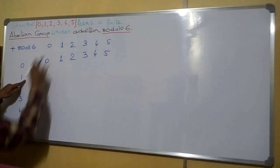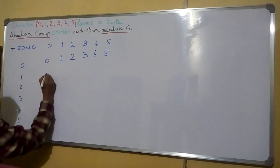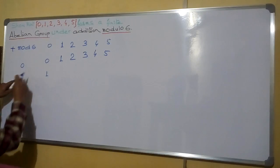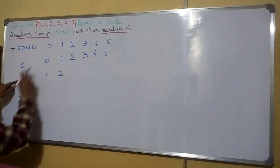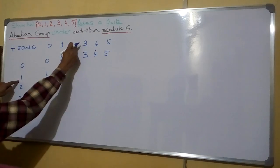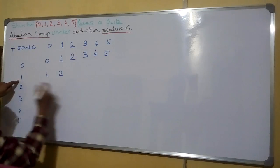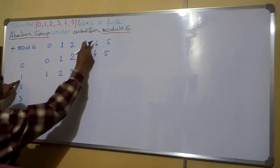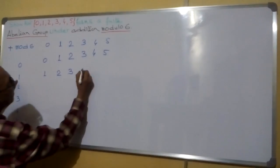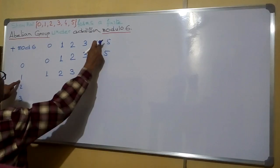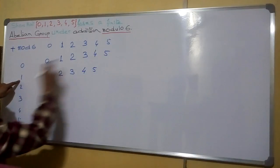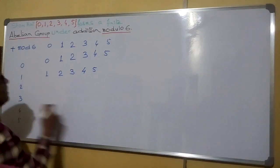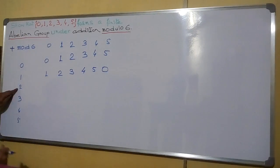1 plus 0 is 1; the remainder is 1. 1 plus 1 is 2; the remainder is 2. 1 plus 2 equals 3; the remainder is 3. 1 plus 3 is 4; the remainder is 4. 1 plus 4 is 5; the remainder is 5. 1 plus 5 is 6; dividing by 6 the remainder is 0.